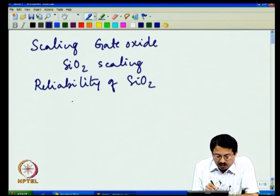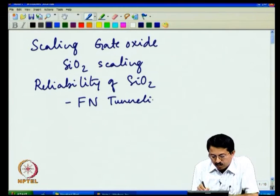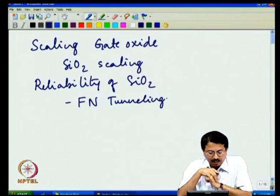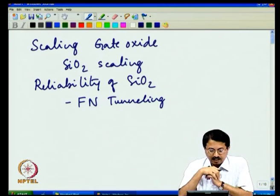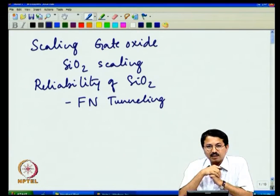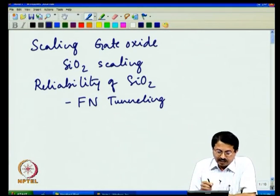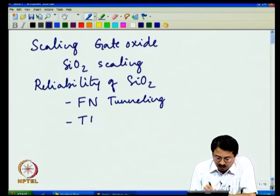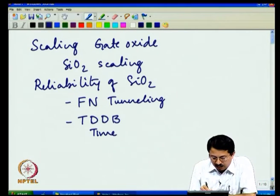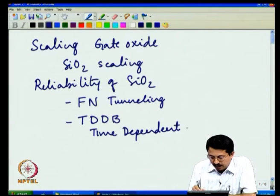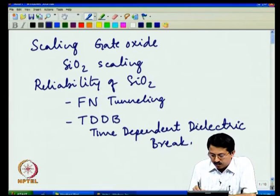In particular we will look at two concepts. One is what we call FN tunneling — that is, if you start applying higher and higher voltages on silicon oxide, increasing the electric field, at some point you will start conducting through the silicon oxide. That phenomenon is called FN tunneling, which is an abbreviation for Fowler-Nordheim tunneling. We will also study what is meant by TDDB, which stands for Time Dependent Dielectric Breakdown.